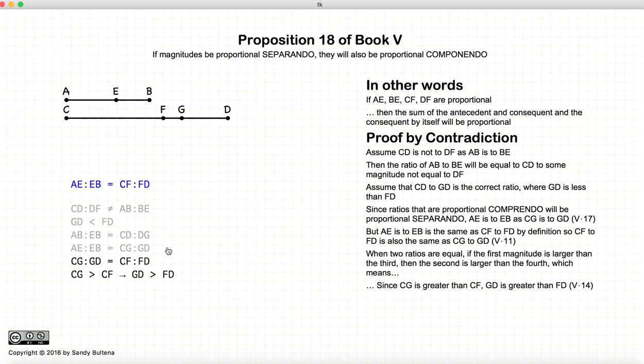Now, according to Proposition 14, if we have two ratios that are equal, if CG is larger than CF, then GD is larger than FD.